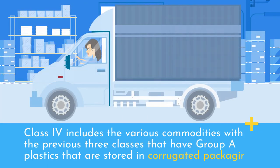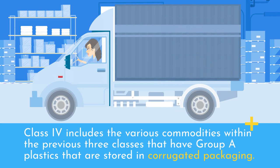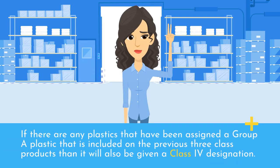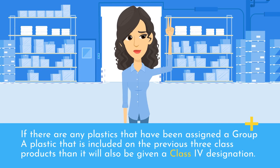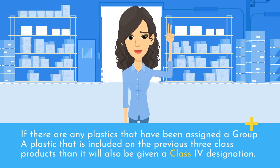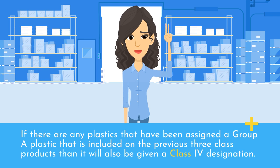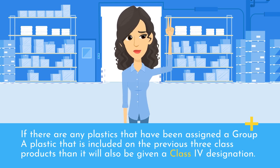Class IV includes the various commodities within the previous three classes that have Group A plastics stored in corrugated packaging. If any plastics assigned a Group A classification are included on previous three class products, then it will also be given a Class IV designation.